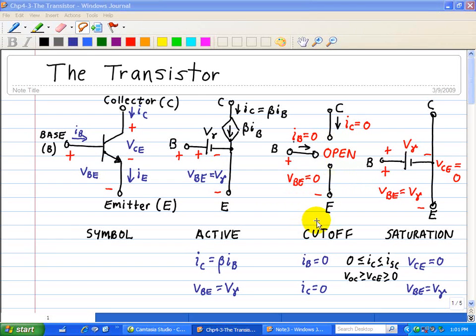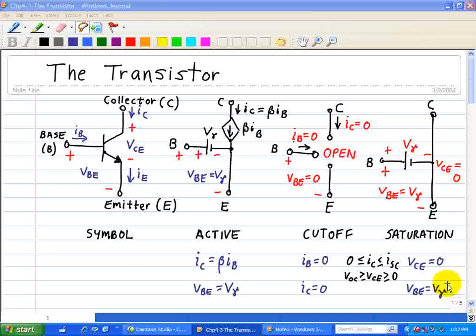However, when VCE equals zero and VBE equals Vgamma, the transistor is in saturated mode, and the device acts like a short circuit between the collector and emitter. These two modes are summarized by writing that the cutoff mode has IB equals zero and IC equals zero. In the saturation mode, we have VCE equals zero and VBE equals Vgamma, our threshold voltage.